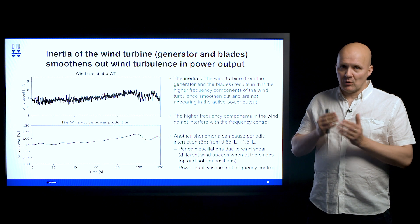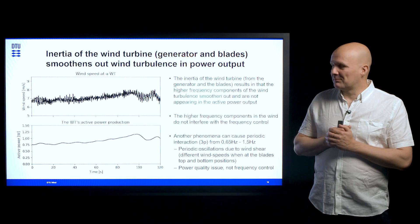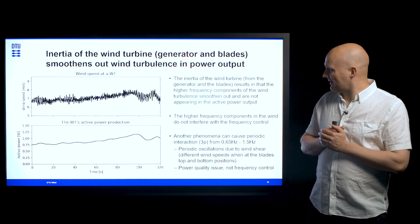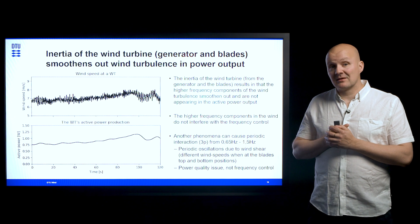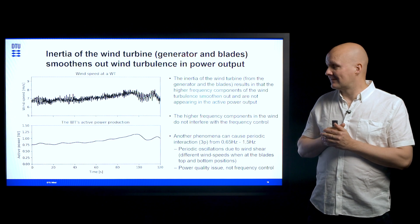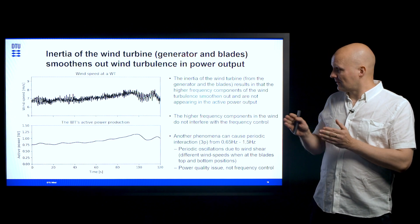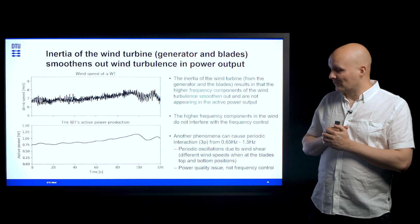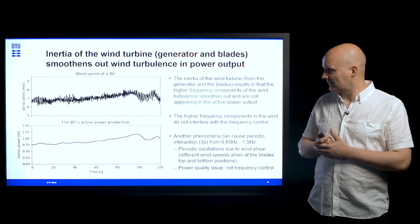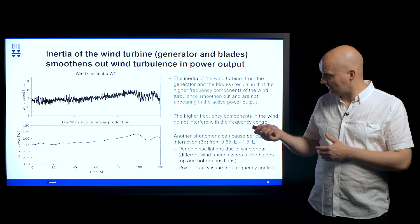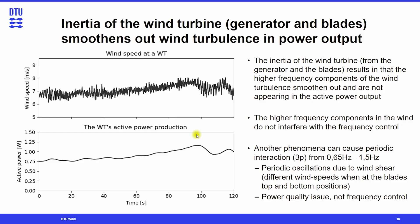The important point to notice here is that the inertia of the wind turbine and blade contributes to a smoothing out of these highest frequency components in the wind, as we can see by comparing the two plots.